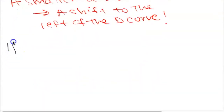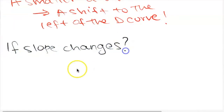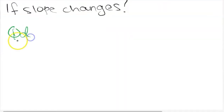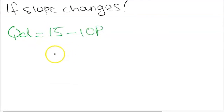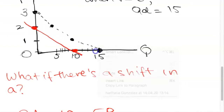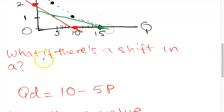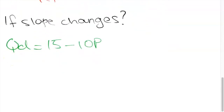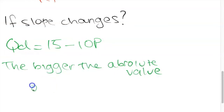But what if the slope changes — what if the b value changes? Initially we had quantity demanded equals 15 minus 5p. If the equation changes to quantity demanded equals 15 minus 10p, the horizontal intercept is still 15, but for every one unit increase in price there will now be a 10 unit decrease in quantity demanded. So when price is 1, quantity demanded is 5. Plotting these two points, we see that when the absolute value of b increases the demand curve becomes flatter.